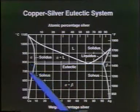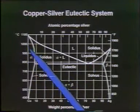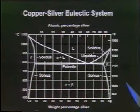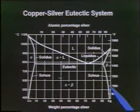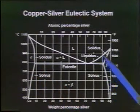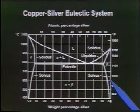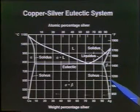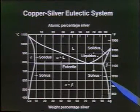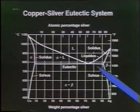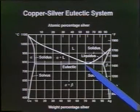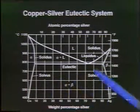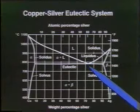On this end of the diagram, there's a solid solution — that's the solid solution alpha, everything in here. Over here, we have a solid solution — it's beta, over here. So we have an alpha solid solution and a beta solid solution that are combined to give us the two phases that are going to be anywhere between here, and it will form this particular eutectic.